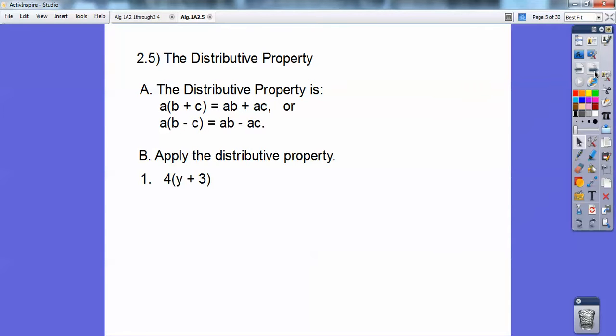And you guys have all done this before, so apply the distributive property. So here I'm going to go 4 times y is 4y, 4 times 3 is 12. So 4y plus 12. This one here, I'm going to go over distributive property here. Y times y is not 2y, it's y squared. Remember that. So y squared plus 7y on this guy.